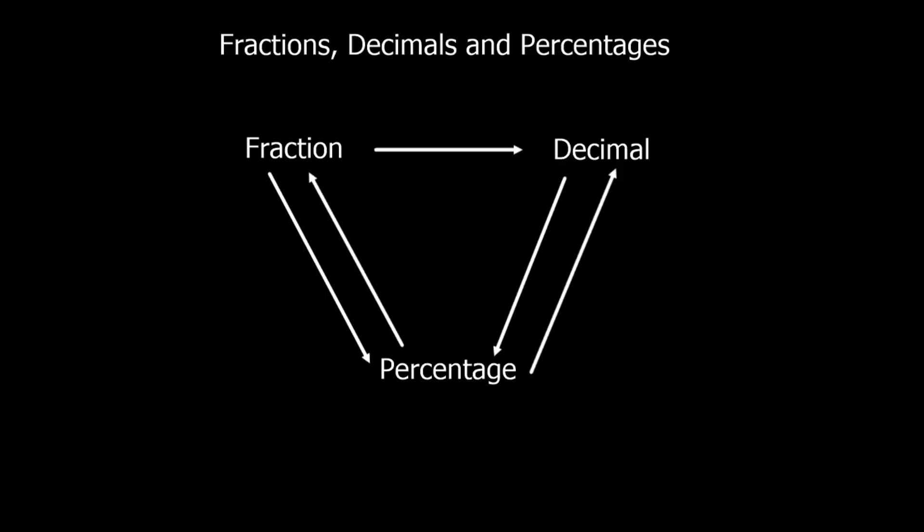Fractions, decimals, and percentages are three different ways of showing an amount of a whole. Because they're three different ways of showing the same thing, we can convert between them. Fractions can be written as decimals or percentages, decimals can be written as fractions or percentages, and every combination of that.